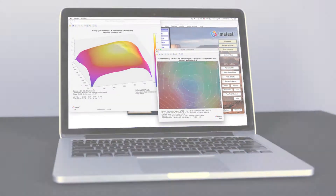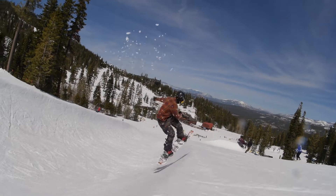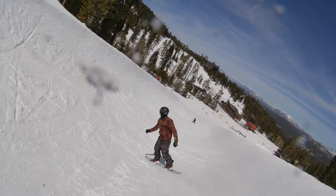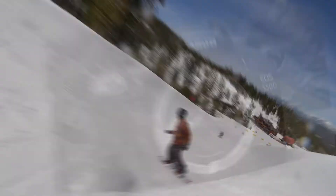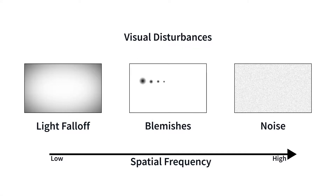Manufacturers can use uniformity measurements to ensure that imaging system components perform as expected and to calibrate non-uniformity correction for each device. Imatest measurements can also be used to detect defects like dead and hot pixels and blemishes such as particles of dust or smudges. Appreciating a beautiful photograph should be dependent on the subject, not artifacts that may be present on the lens or sensor.